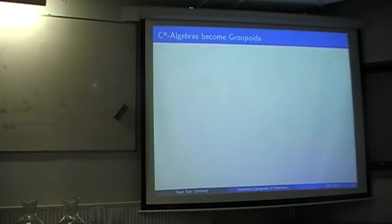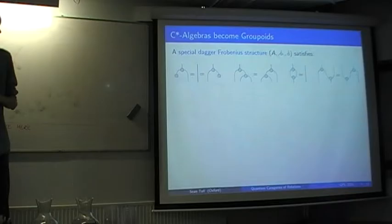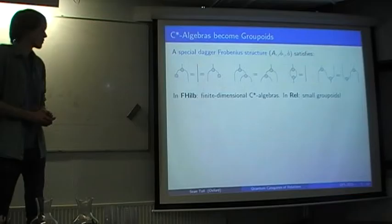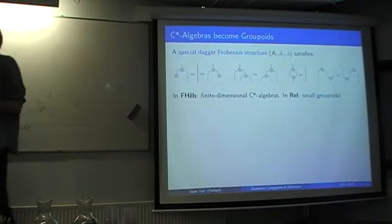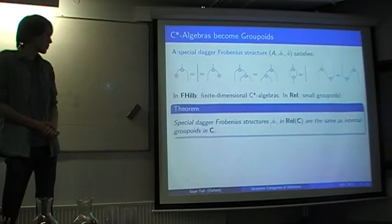So that's the construction. Now let's think about these as toy models — specifically, what are the physical systems? We're looking for the analogue of C*-algebras. In the categorical formulation, these are described by special Dagger-Frobenius structures: an object with multiplication and unit maps satisfying certain equations. When we look at this in FHilb, we get precisely finite-dimensional C*-algebras. The surprising thing that was found is that a special Dagger-Frobenius structure in REL is exactly the same thing as a small groupoid, where the multiplication morphism is the relation composing two morphisms of the groupoid, and the unit picks out all identities.